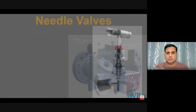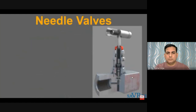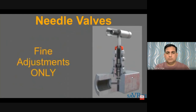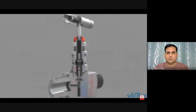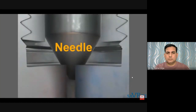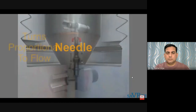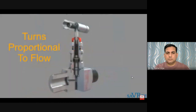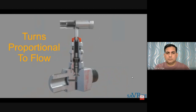A needle valve is used to make relatively fine adjustments in the amount of fluid flow. Its most distinguishing characteristic is the long tapered needle-like point on the end of the valve stem, which acts as a disc. The needle passes through the orifice before it seats, permitting a very gradual increase or decrease in the size of the opening. Needle valves are frequently used as metering valves, because the number of turns of the hand wheel can be directly correlated to the amount of flow.